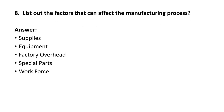Next question: list out the factors that can affect the manufacturing process. The answer is: supplies — meaning the material ordered from vendors; equipment — the various machines available at your shop floor; factory overhead — the various people working at the shop floor and other overhead components; and also special parts and the workforce.